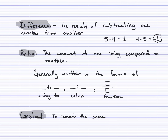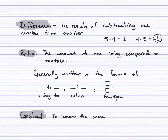A ratio is the amount of one thing compared to another. Slope is a specific type of ratio. A ratio is generally written using the words 'to,' a colon, or a fraction. For this video, we will specifically use a fraction to represent slope — not 'to' or a colon.